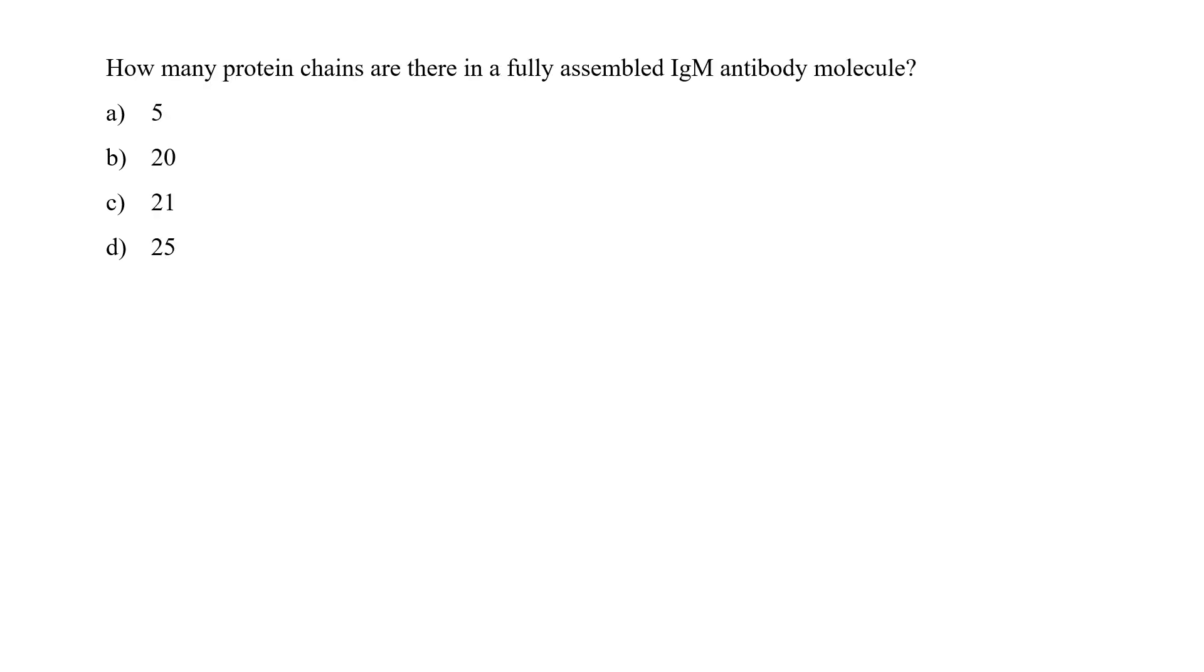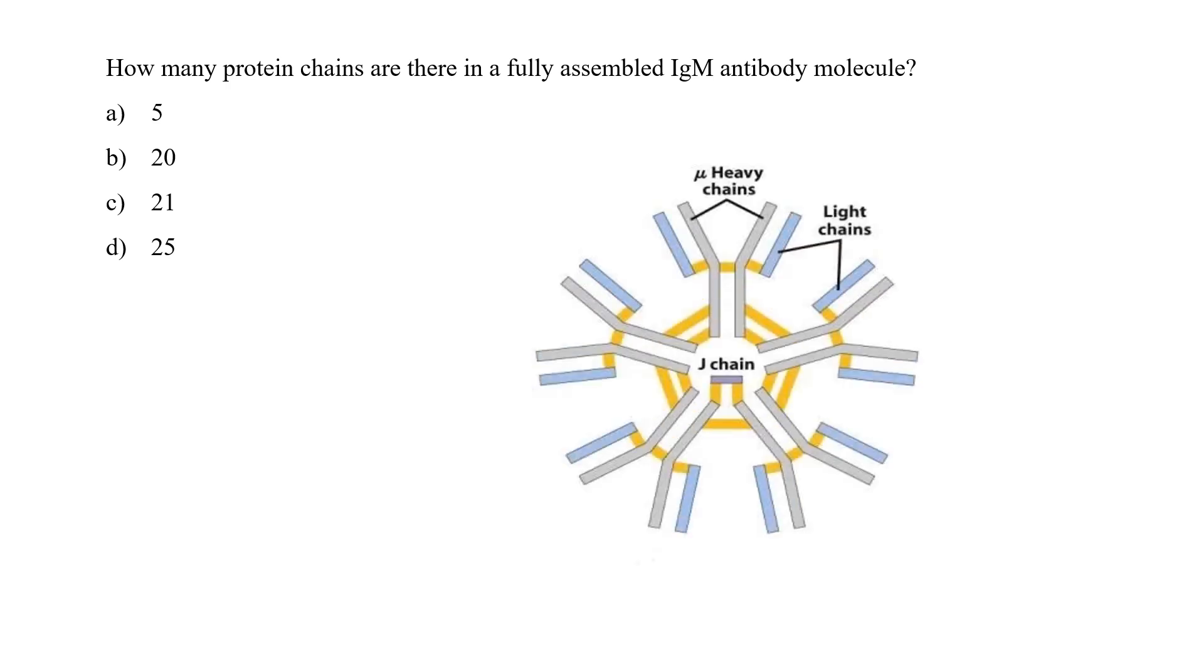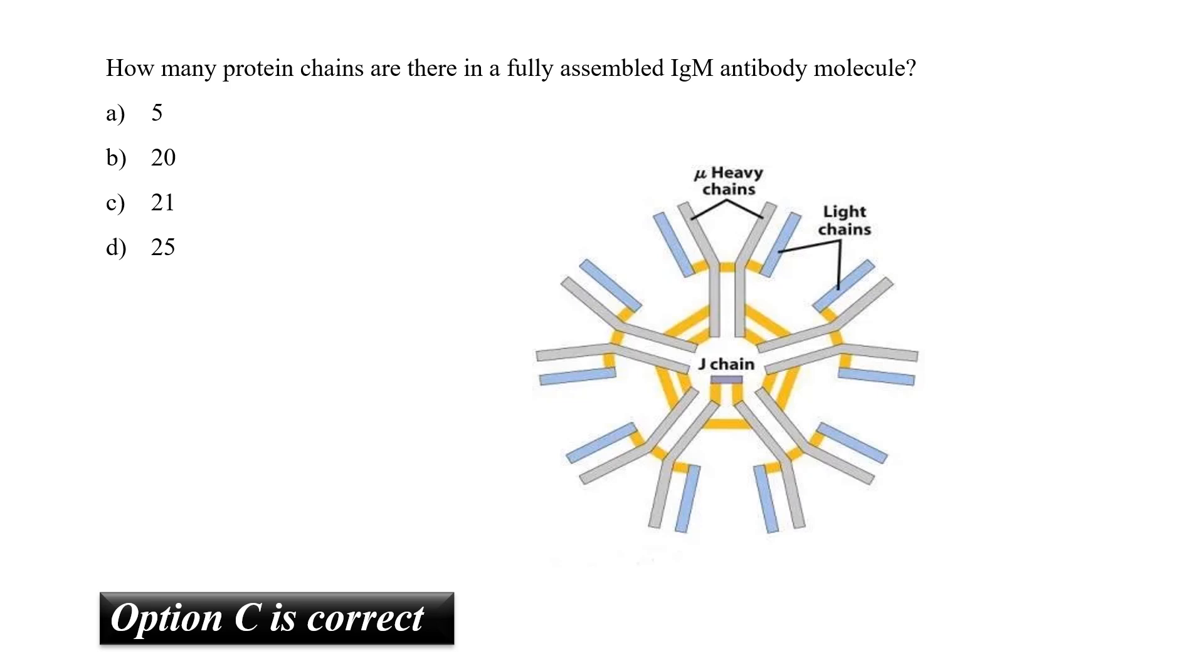How many protein chains are there in a fully assembled IgM antibody molecule? If we see a pentameric IgM molecule, they have 10 heavy chains, 10 light chains. And in fact, if you see closely, there is one J chain which is connecting all these individual IgM molecules. So in total, there would be 21 polypeptide chains which are connecting and making a full pentameric effector molecule.